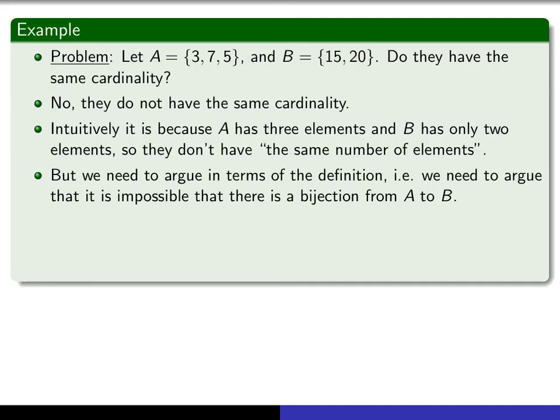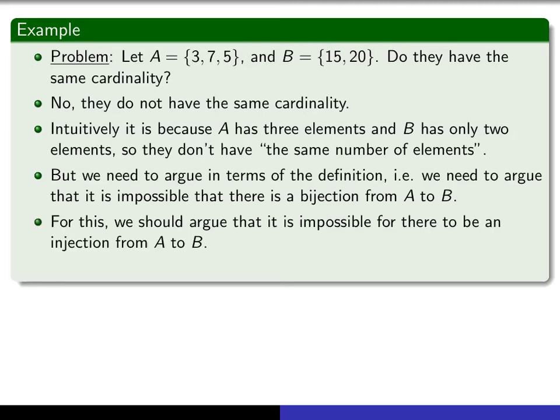But that's just the intuitive definition. The real definition would be you have to argue that it's impossible for there to be a bijection from A to B. And I guess it's pretty clear that you can find a surjection from A to B, right? I can map 3 to 15, 7 to 20, and 5 to whatever I like, say 15. So that's certainly a surjection, but clearly it's not an injection. It's not 1 to 1. So it's the injective part that breaks down here. So a formal proof, I haven't given the entire proof, but this is a proof with a gap in it. It's certainly true that there cannot be an injection from A to B.